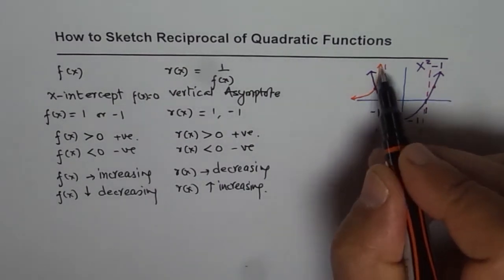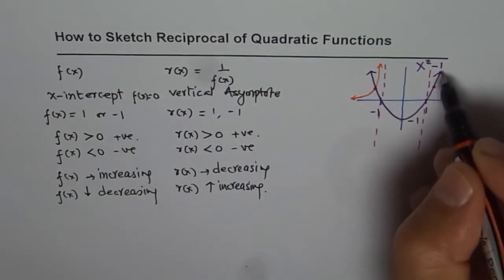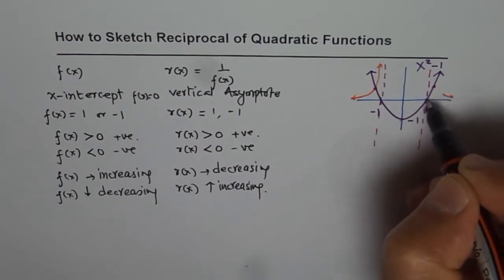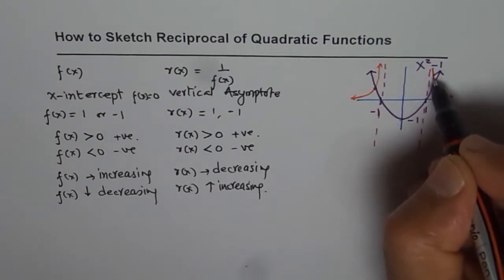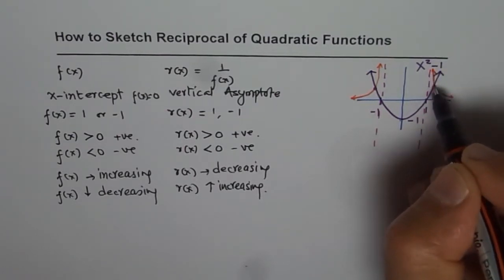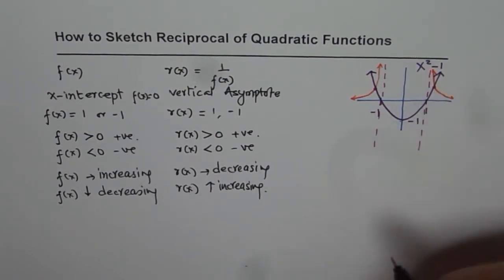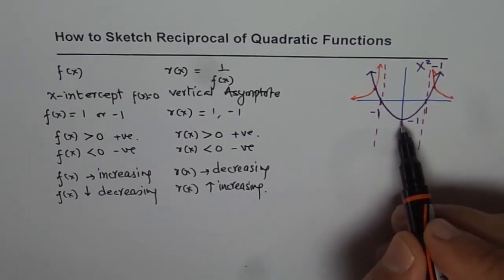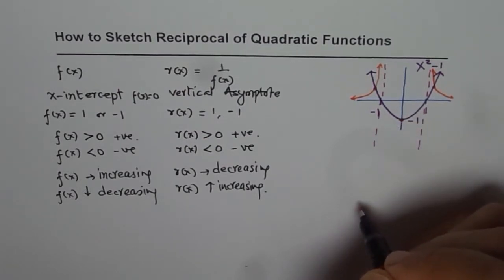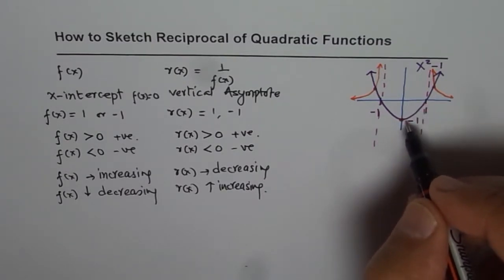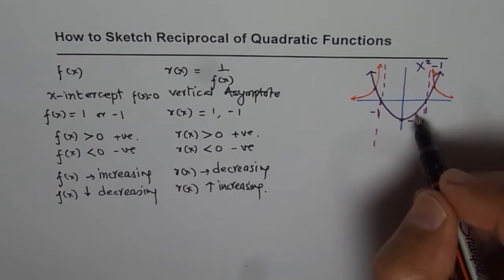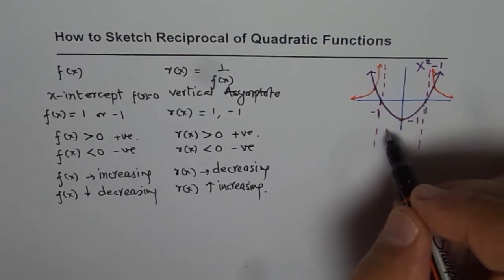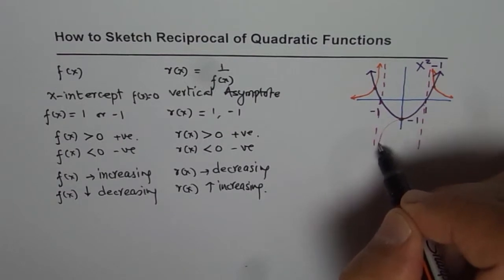The right side is kind of a mirror image. The function is increasing there, so the reciprocal should be decreasing but positive. As the function approaches zero, the reciprocal approaches infinity, giving us the same 1-over-x shape. For the center part between the asymptotes, reciprocal of minus 1 is minus 1, so that is a common point. All values are less than one and negative, so the reciprocal will be greater than one in absolute value but negative. As we approach zero, the reciprocal approaches negative infinity, completing the graph.